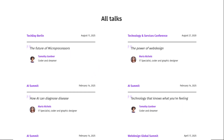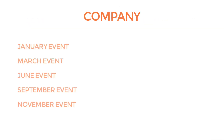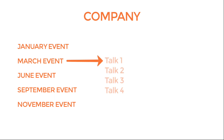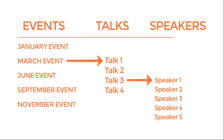We can take it even further, adding in talks. Let's say a big corporation or event company does many events throughout the year. At each event, there are multiple talks with multiple speakers. Those are three separate items: events, talks, and speakers. There are many ways you can mix and view information through the connections you're about to learn.